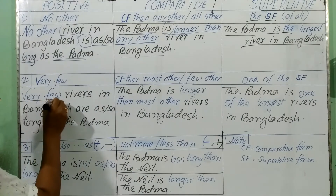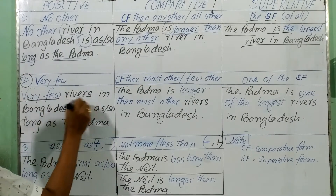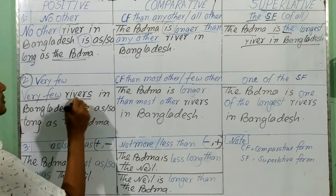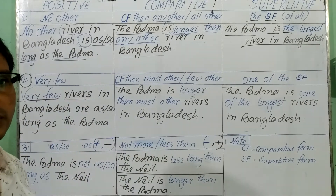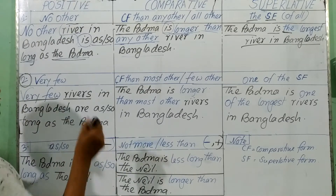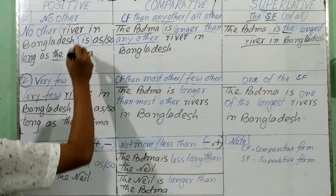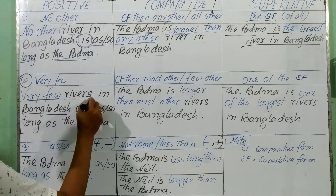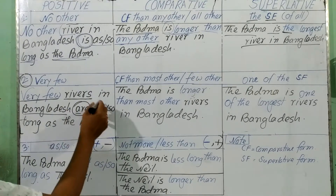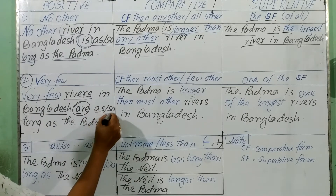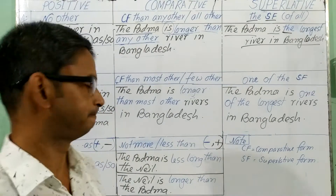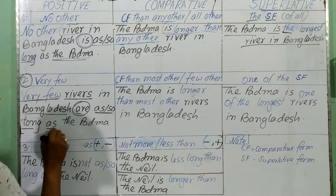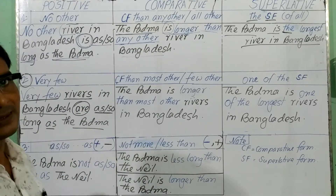In the next rule, you can see 'very few.' Then the second rule: 'very few rivers.' 'Very few' means it is a plural form, so after this you have to use a plural form of noun — 'very few rivers in Bangladesh.' And in the previous sentence I wrote 'is,' but as there is 'rivers,' you will have to use 'are.' 'Very few rivers in Bangladesh are as long as the Padma.'